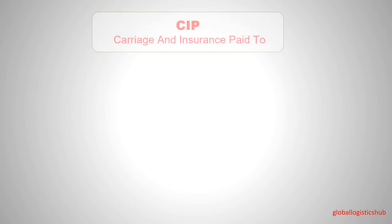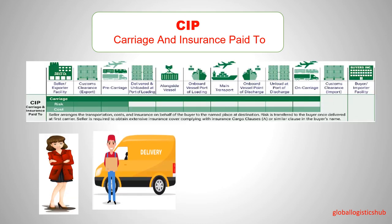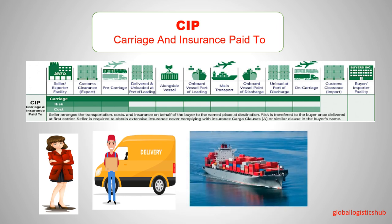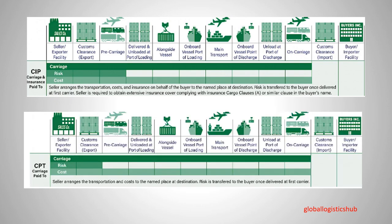Incoterm number four is CIP, which stands for Carriage and Insurance Paid To. In CIP, the seller is responsible for delivering the goods to the destination, the cost of international freight, and the insurance fees and charges. CIP is very similar to CPT, except that with CIP the seller is also responsible for arranging main carriage insurance.